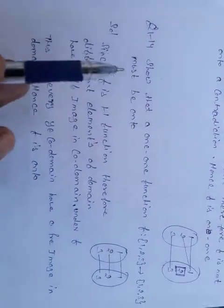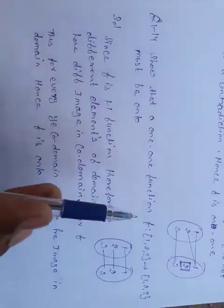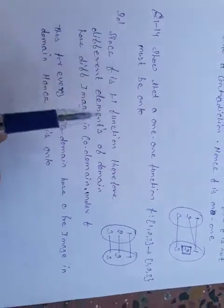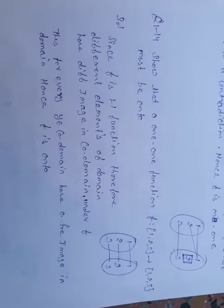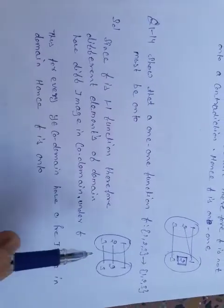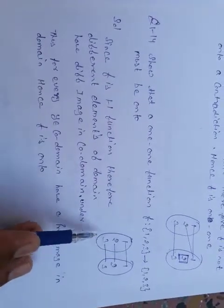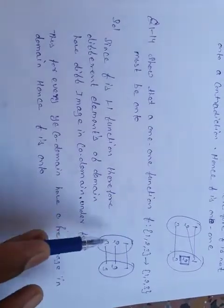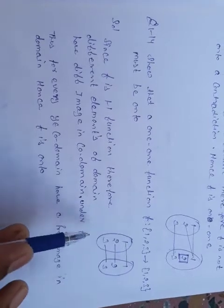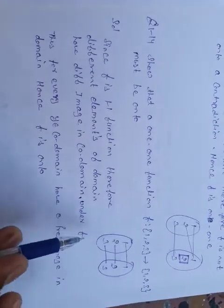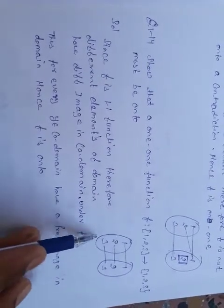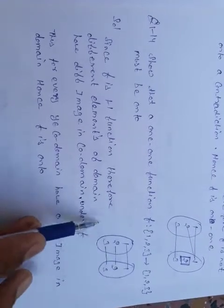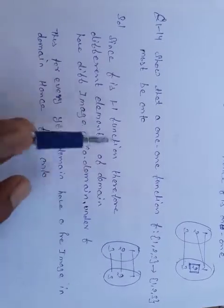Example 14: Show that a one-one function f from {1, 2, 3} to {1, 2, 3} must be an onto function. Since f is one-one, different elements have different images. Both domain and co-domain have 3 elements each. So 1 maps to 1, 2 maps to 2, 3 maps to 3 — different elements of domain have different images, hence f is one-one.